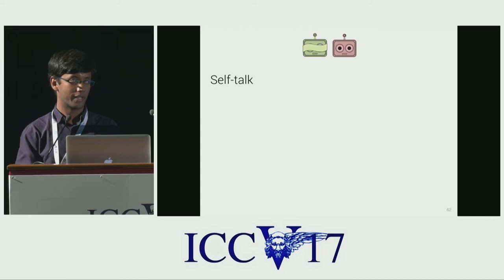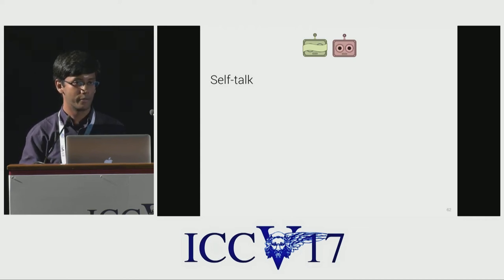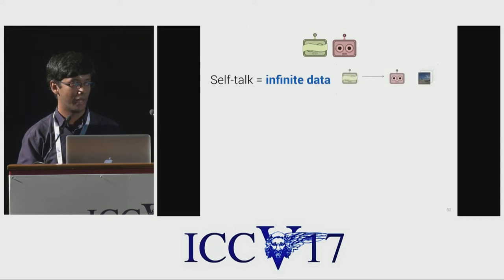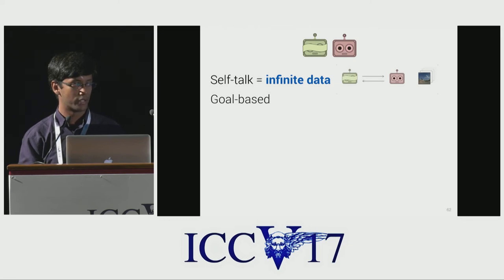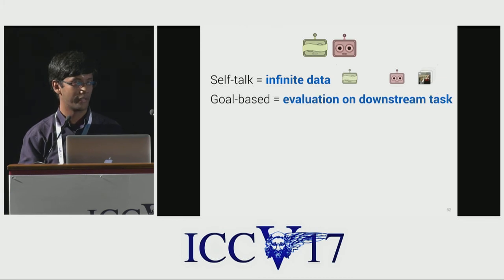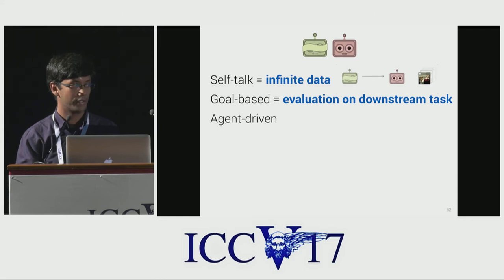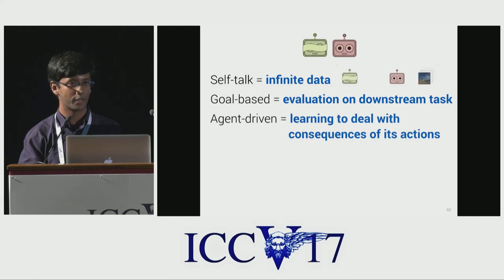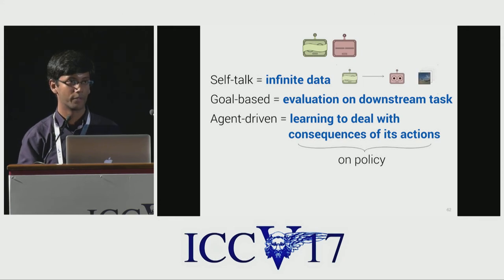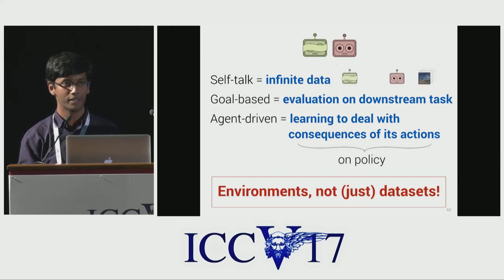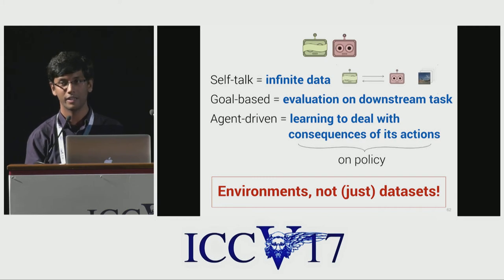These agents are trained via self-talk, which means we only need a dataset of images without paired human dialogue data, giving access to virtually infinite data. Training and evaluation is goal-based, so we bypass all issues of evaluating natural language generation and can evaluate performance on the downstream task of image-guessing. Dialogue is agent-driven, so these agents get to see a much larger space of utterances during training and learn to deal with the consequences of their actions. This indicates a move from supervised learning on static datasets to environments where agents have agency.